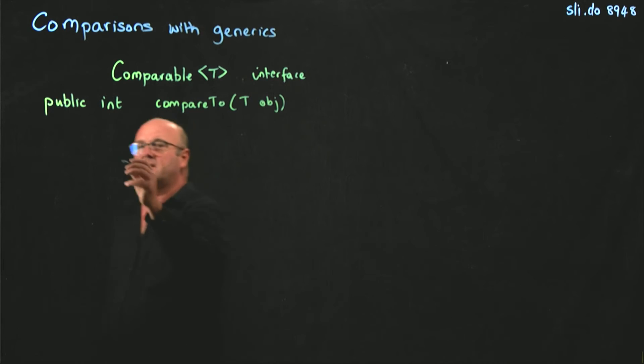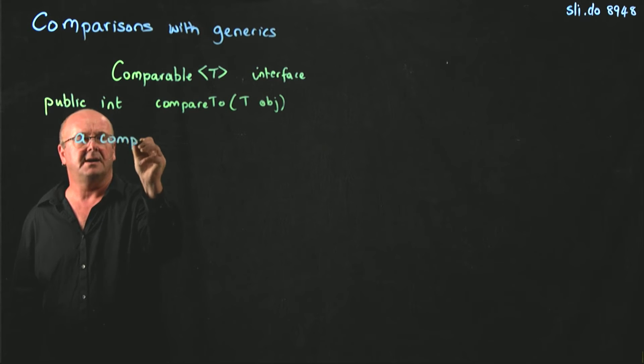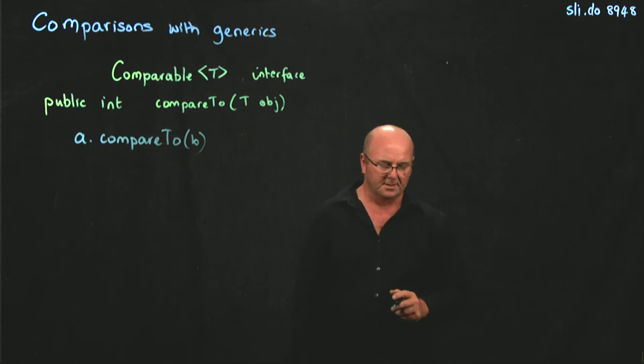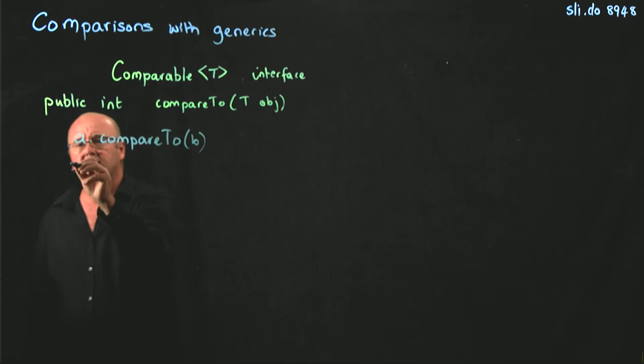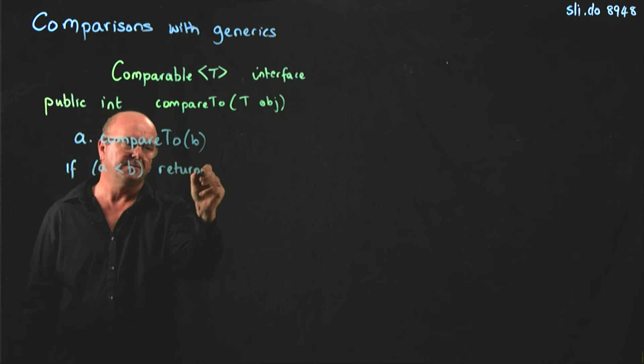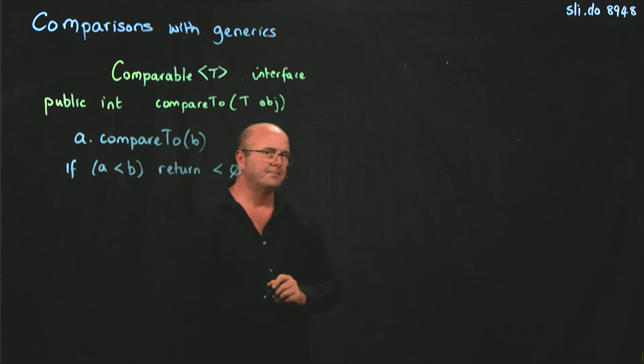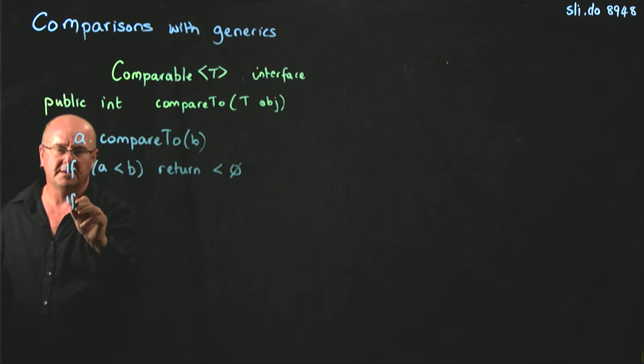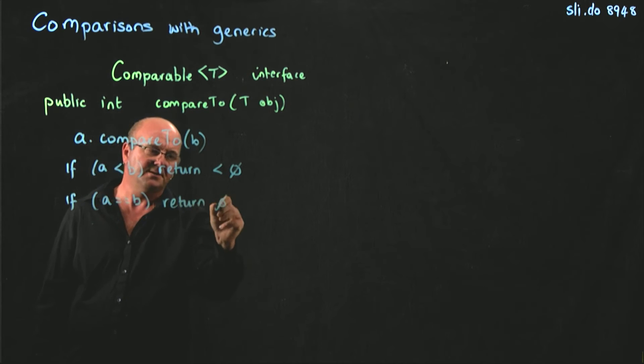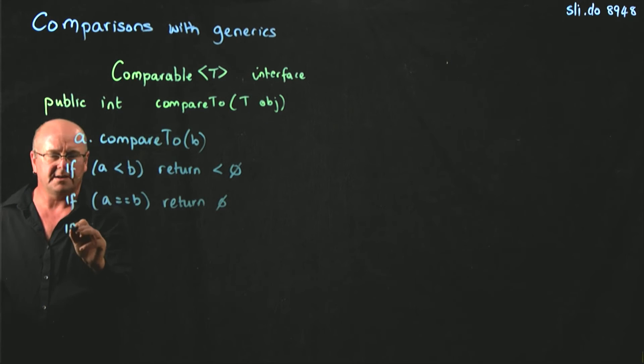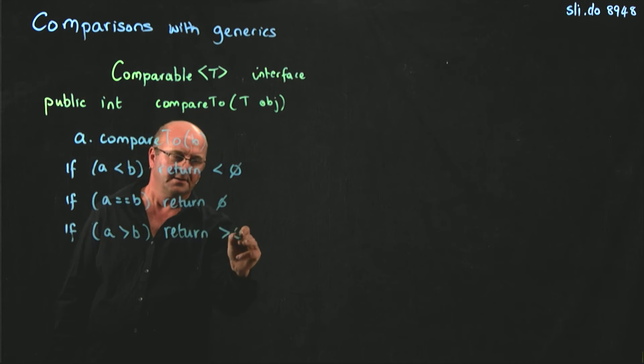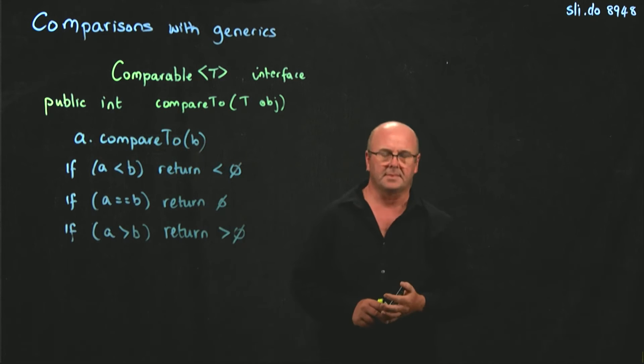And so if we call, for example, a.compareTo(b). If a is less than b, we'll return less than zero. If a is equal to b, we return zero. And if a is greater than b, we return more than zero. That's the rules.